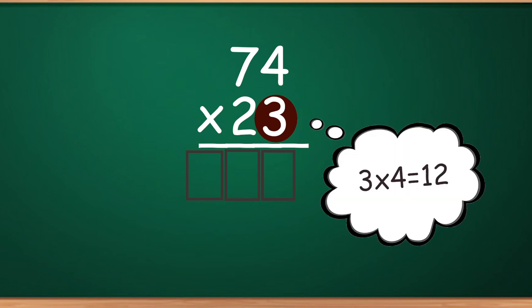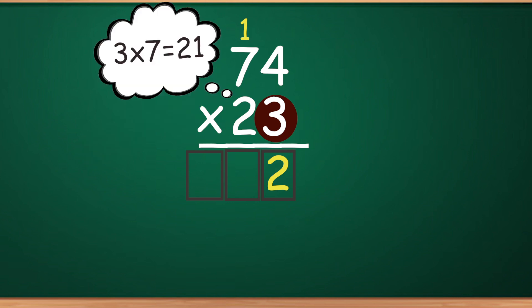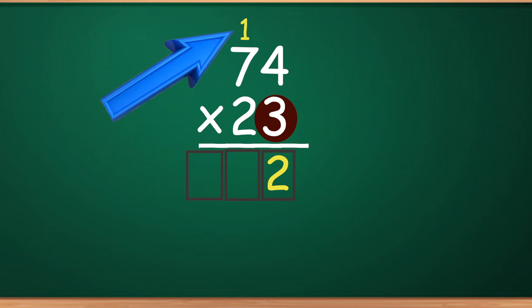Since you only have one spot to put the number, you carry over the first number to the top. Next, you will move over to the next number and multiply that, then add the little number that's on top.